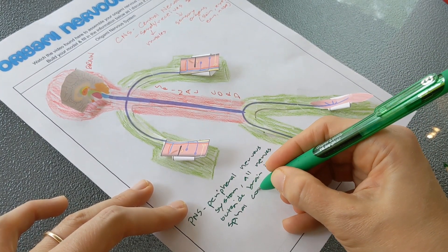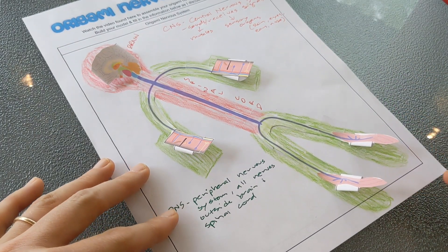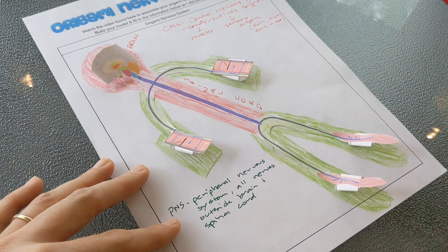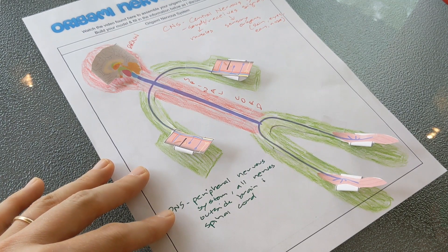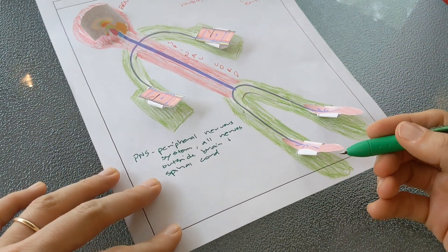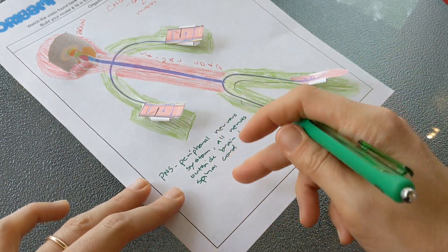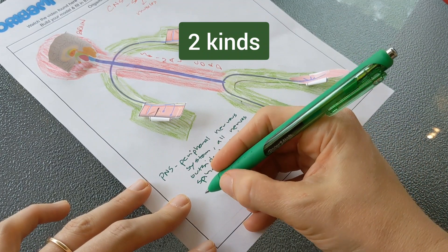This includes the arms and legs which you can clearly see from the diagram, but it also includes nerves running to the organs in your abdomen, for example all your digestive organs and the nerves running to your heart. Now there are two main kinds of nerves in the peripheral nervous system.